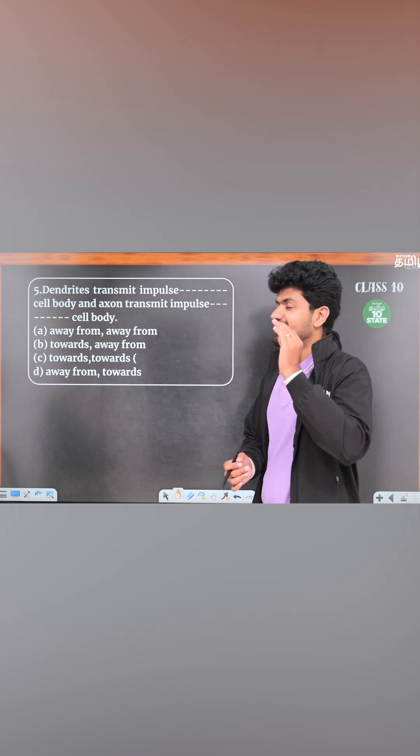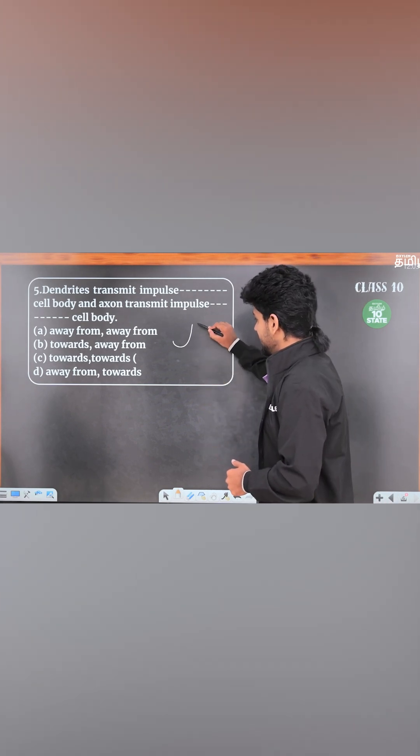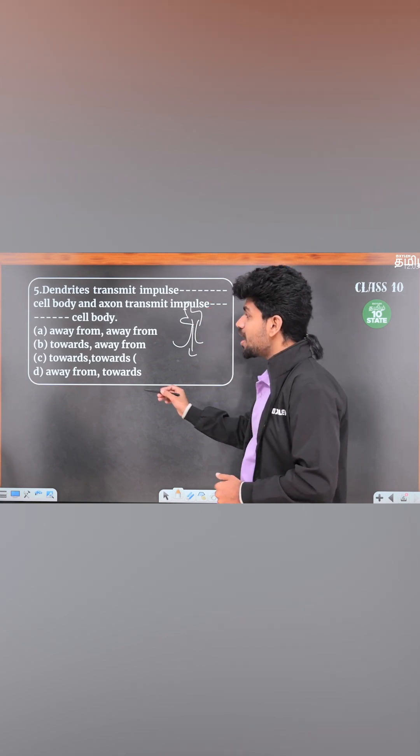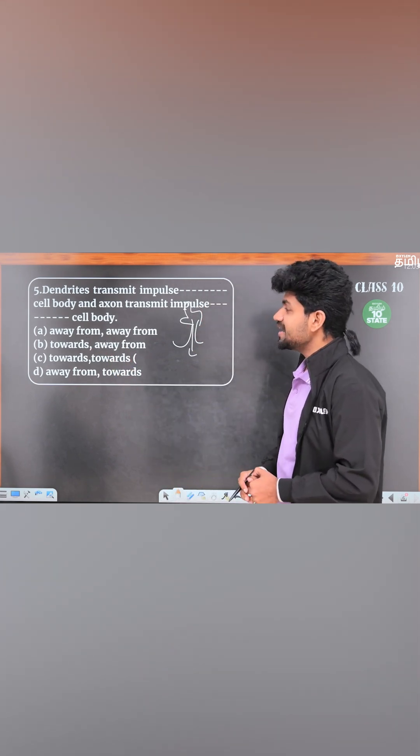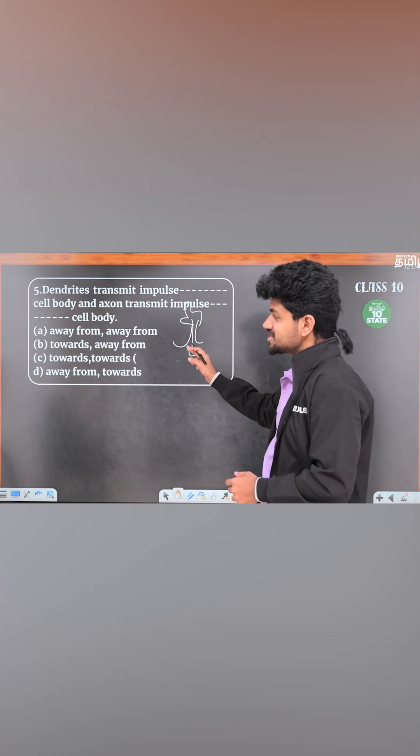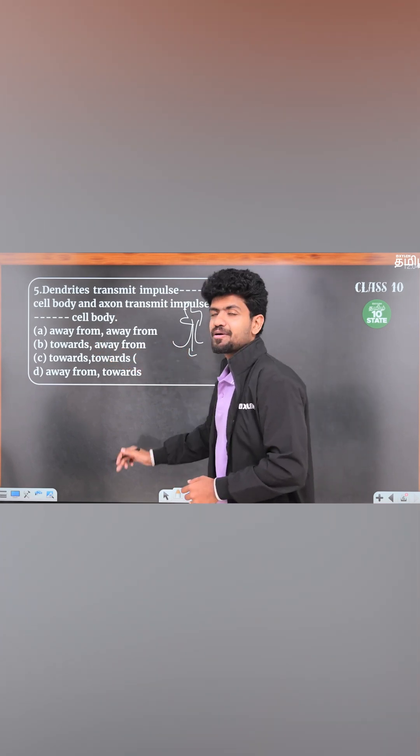And the last question: Dendrites transmit impulse dash to cell body. So what do you want to say? Towards. That's why the cell body is sent to the cell body. This is Axon. Then Dendrites transmit impulse towards the cell body. And Axon transmit impulse away from the cell body.